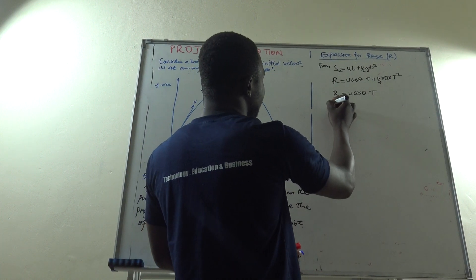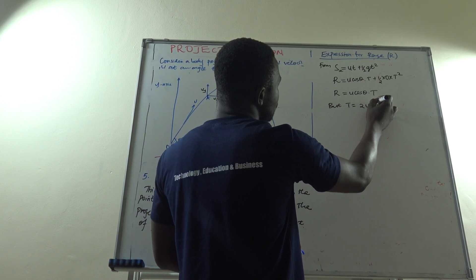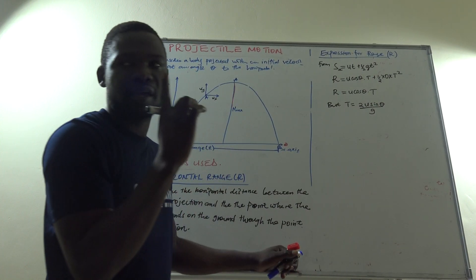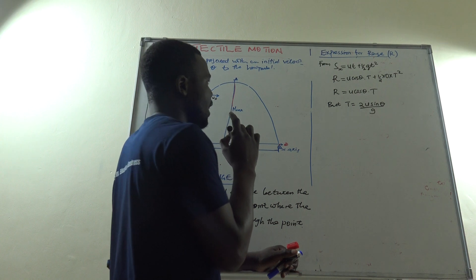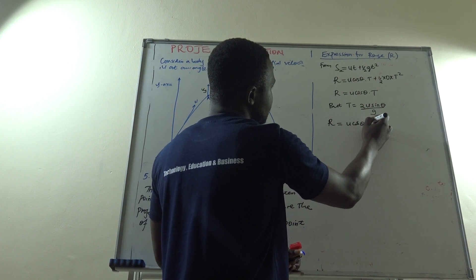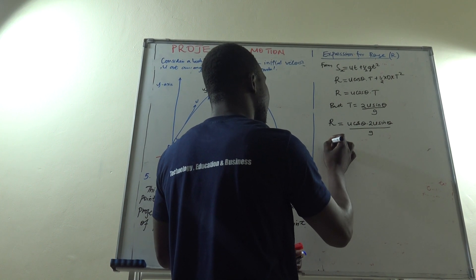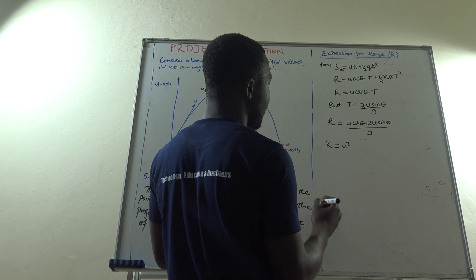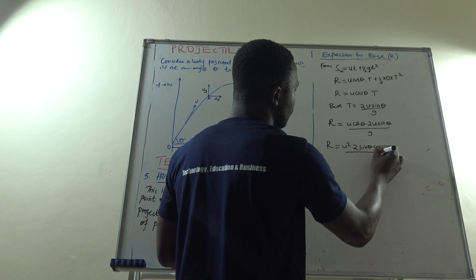But we have already shown that capital T is equal to 2U sinθ divided by G — that is what we showed when looking at the expression for time of flight. So our R becomes U cosθ times 2U sinθ divided by G.